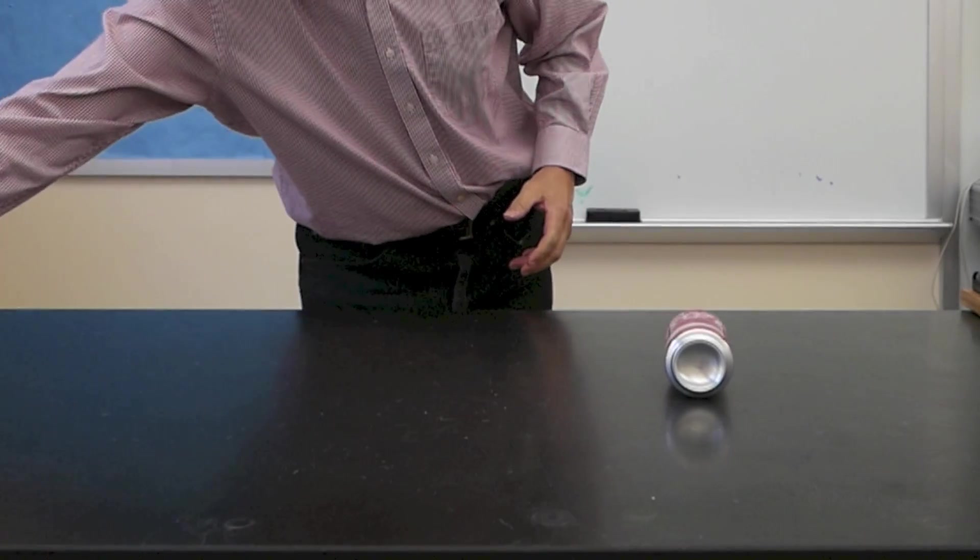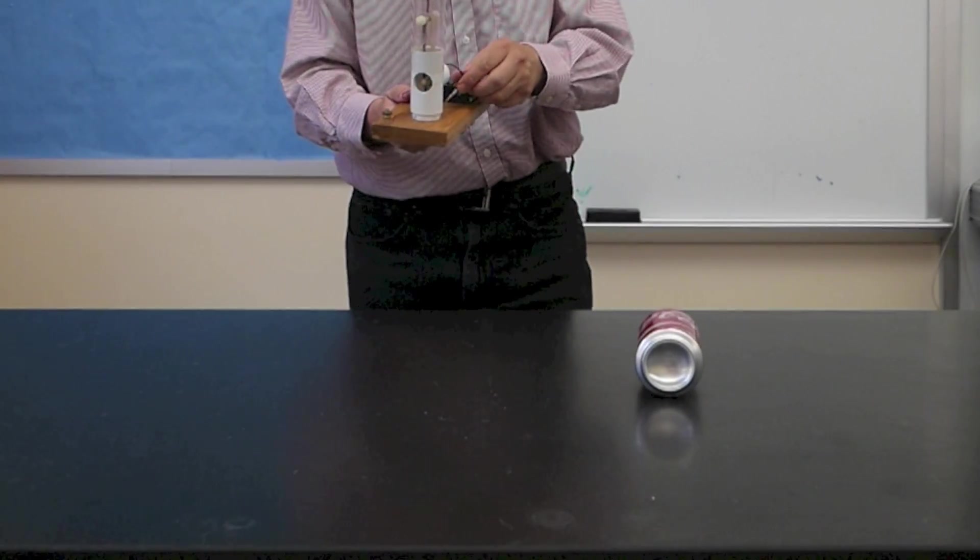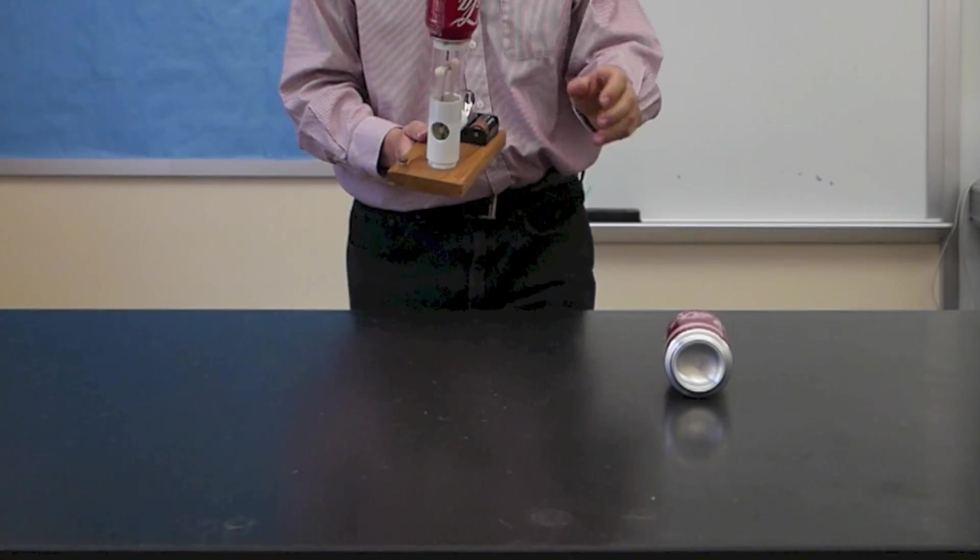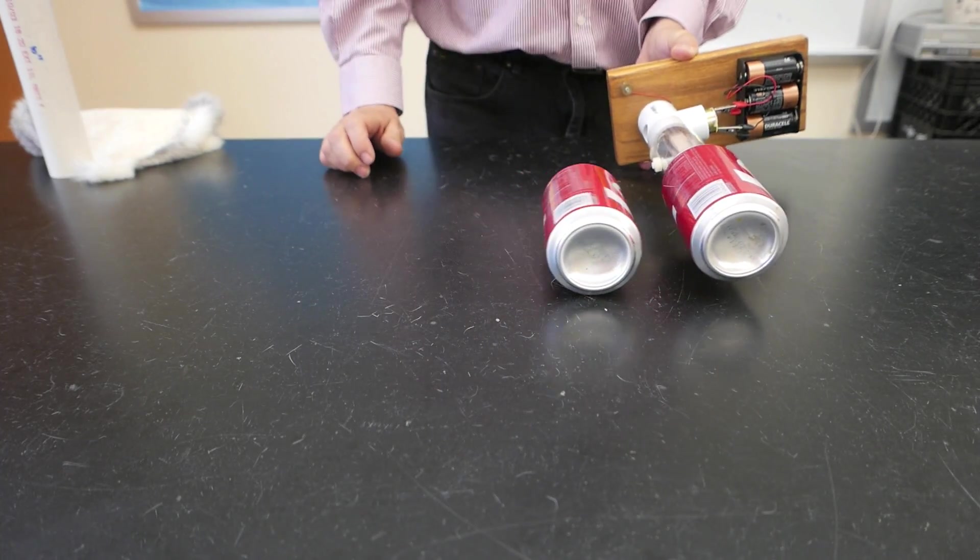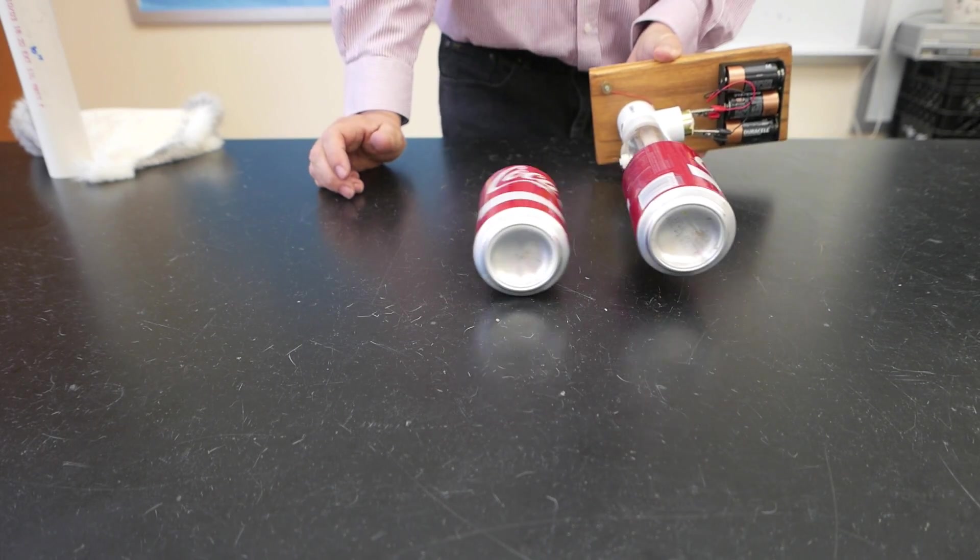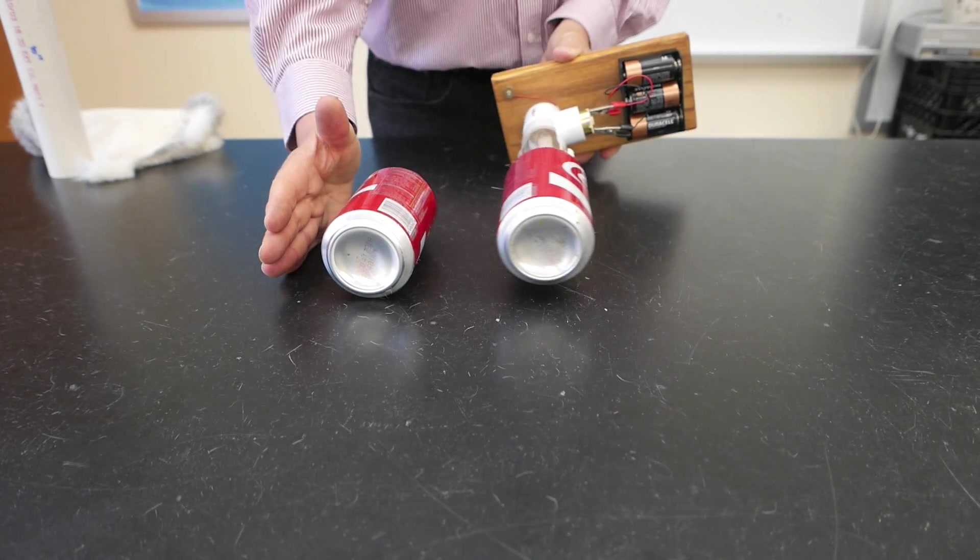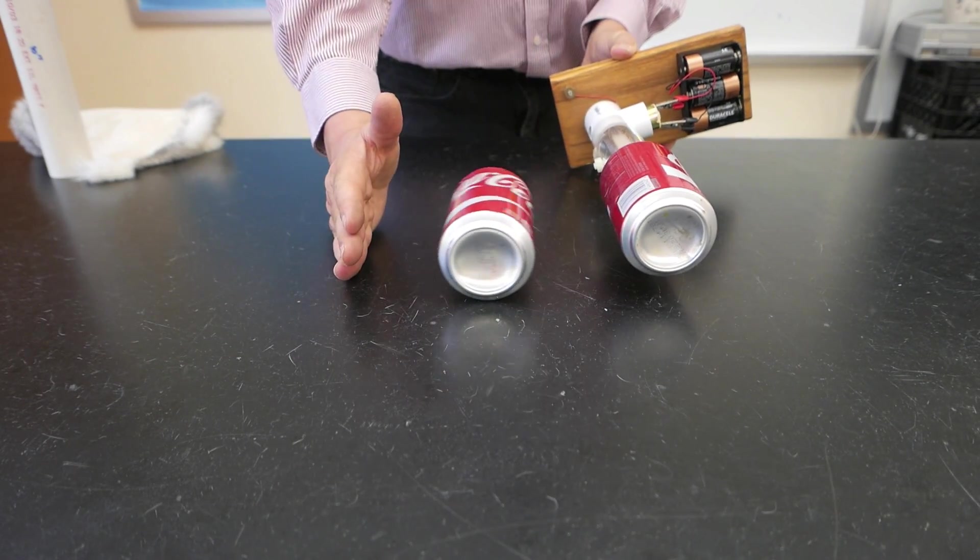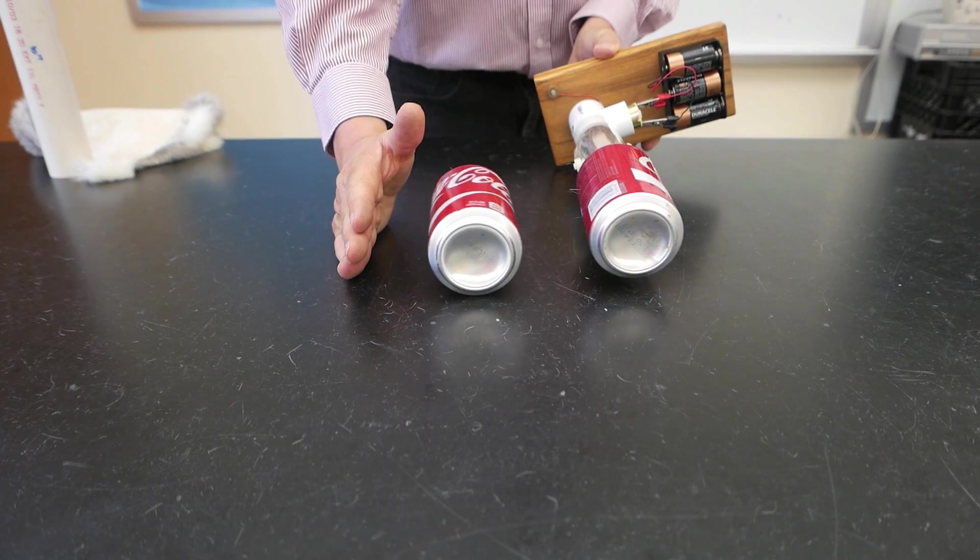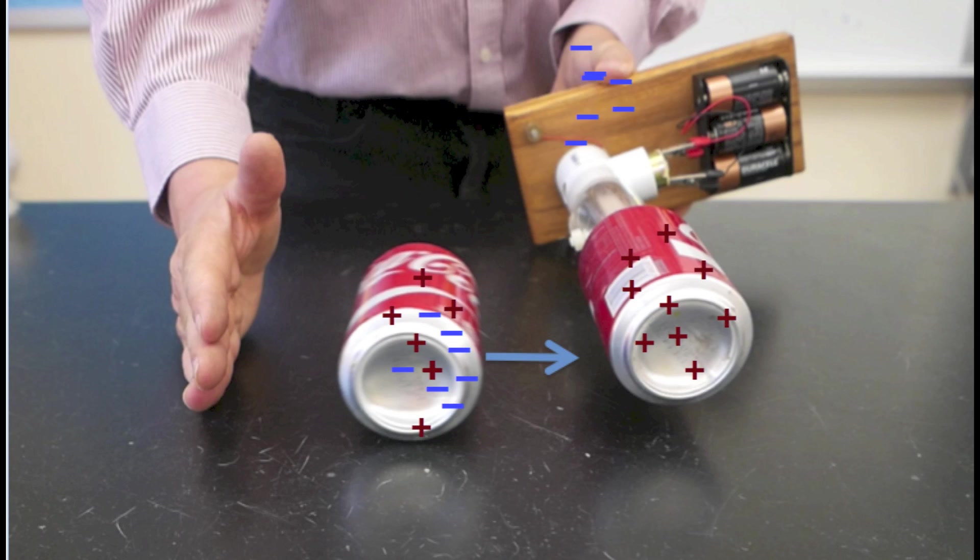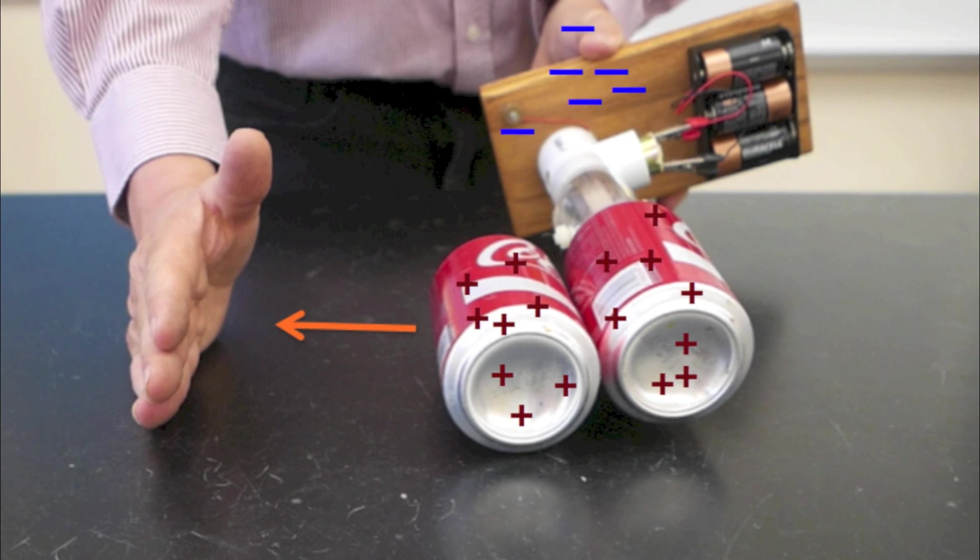This time we'll try it with the Van de Graaff generator. The neutral can is attracted to the generator through the process of induction. When they touch,